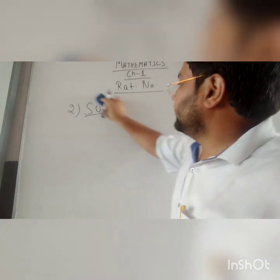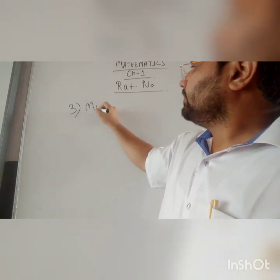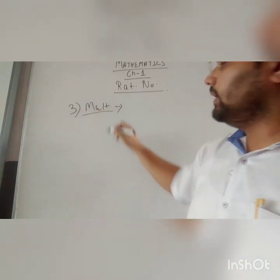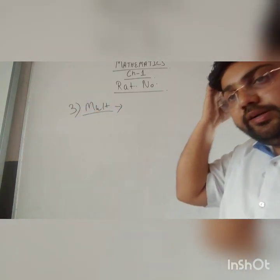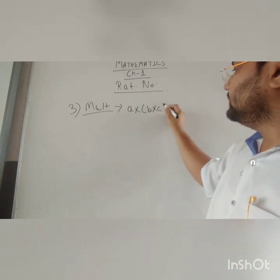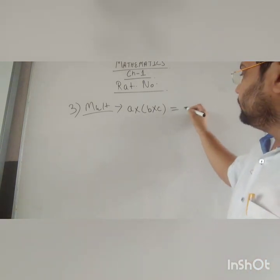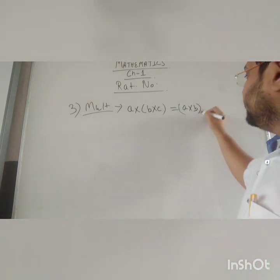Now multiplication. In the multiplication part, what it says is a into b into c, same as addition and subtraction with the operator changed, should be equal to a into b into c.